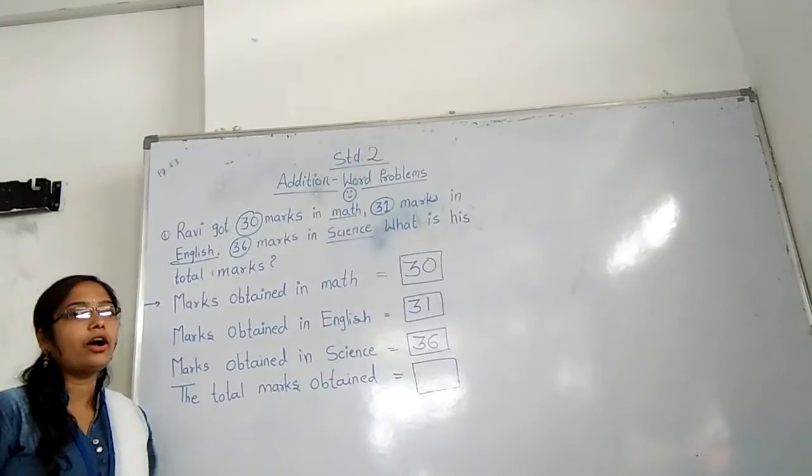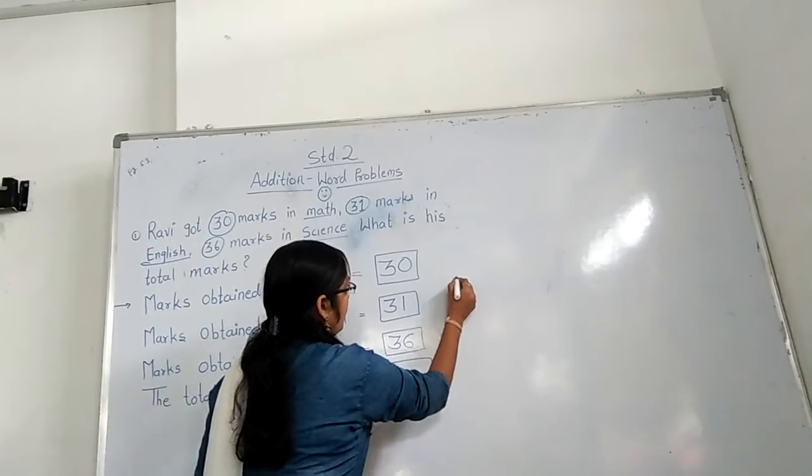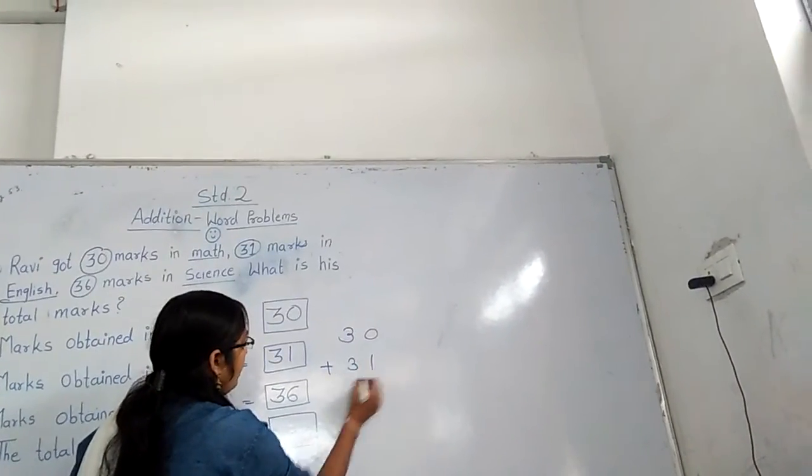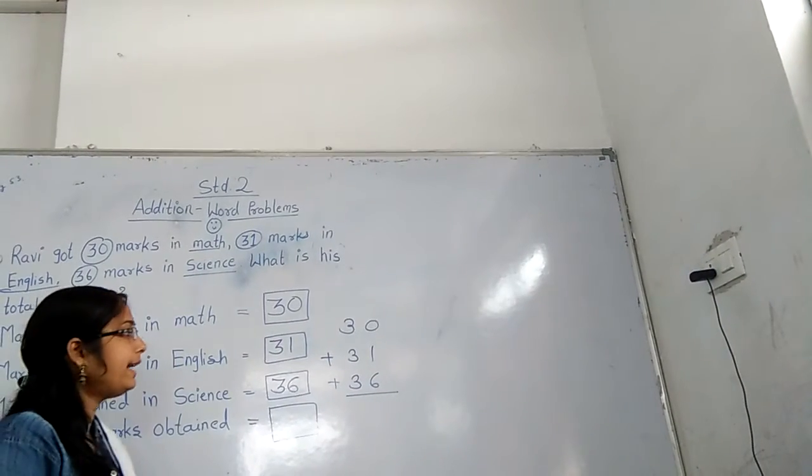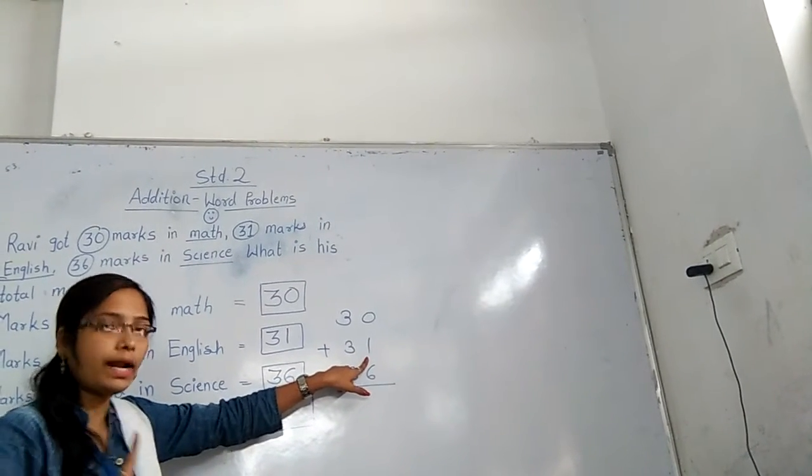So just add all those numbers. You know the addition of 3 digit and 2 digit also. So 30 plus 31 plus 31 plus 36. Just add it.